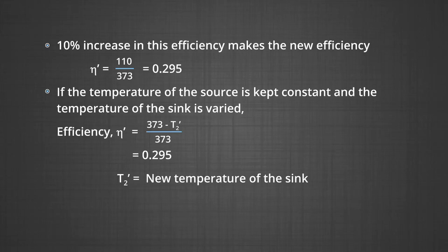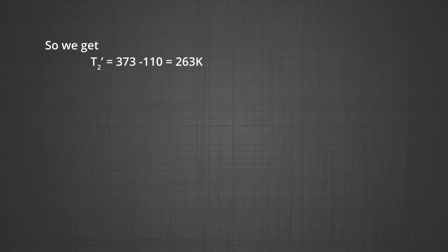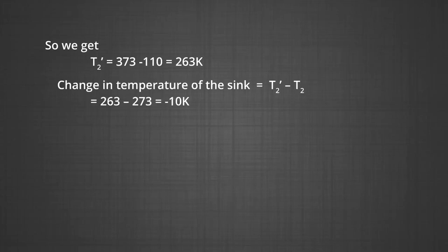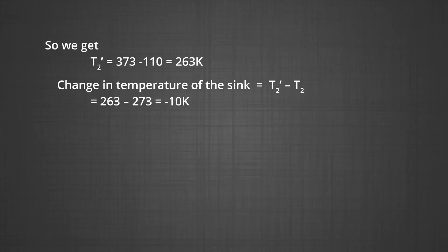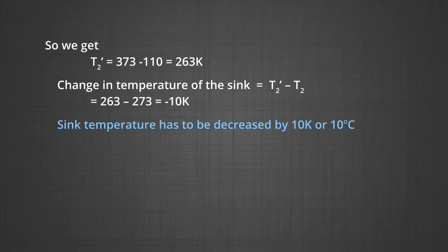From (373 − T₂')/373 = 0.295, we get T₂' = 373 − 110 = 263 K. The change in temperature of the sink is T₂' − T₂ = 263 − 273 = −10 K, which means the sink temperature must be decreased by 10 K or 10°C.